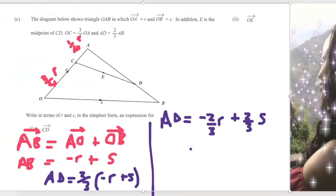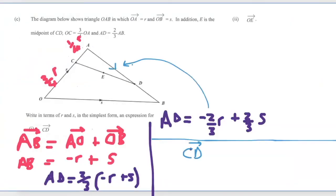So to get CD, we have the direction AD which is moving from A to D. That's the same direction as AB, taking the same direction as OA. So to get CD we have to have CA plus AD. AD is minus two over three R plus two over three S. It's the same direction as AB so we haven't changed the sign.